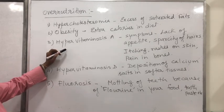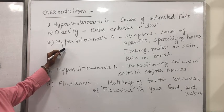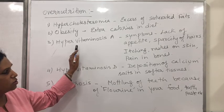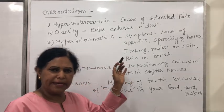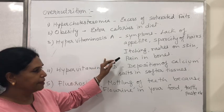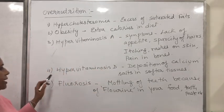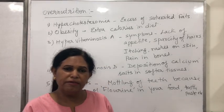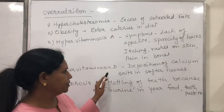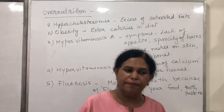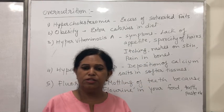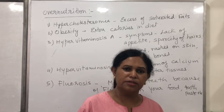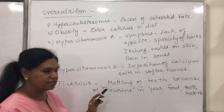Sometimes if you have excess vitamin A in your diet, that leads to hypervitaminosis A. Since it is a fat-soluble vitamin, excess of it leads to lack of appetite, hair loss, itching on skin, and even pain in the bones. There could also be hypervitaminosis D — vitamin D is also fat-soluble, and having it in excess leads to increased calcium deposition in soft tissues and joints, causing pain in joints and bones.